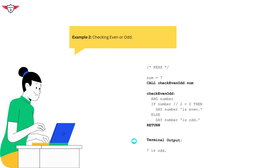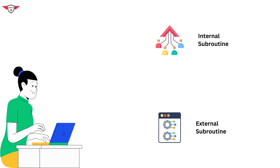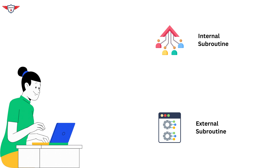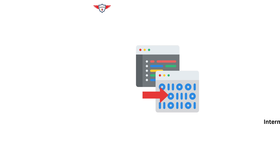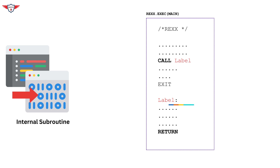Now let's talk about the different categories of subroutines. Broadly, we can divide subroutines into two categories: internal subroutines and external subroutines. Internal subroutines are defined within the same RECS program and are identified by labels. They are useful for organizing your code and reusing common tasks without rewriting code. To create an internal subroutine, you simply label a section of code and use the call statement to invoke it. Remember, labels are followed by a colon.